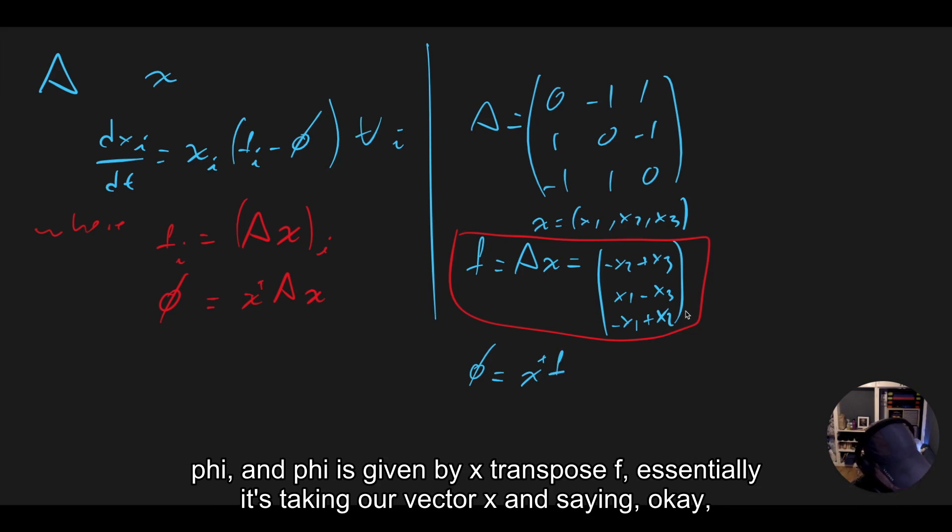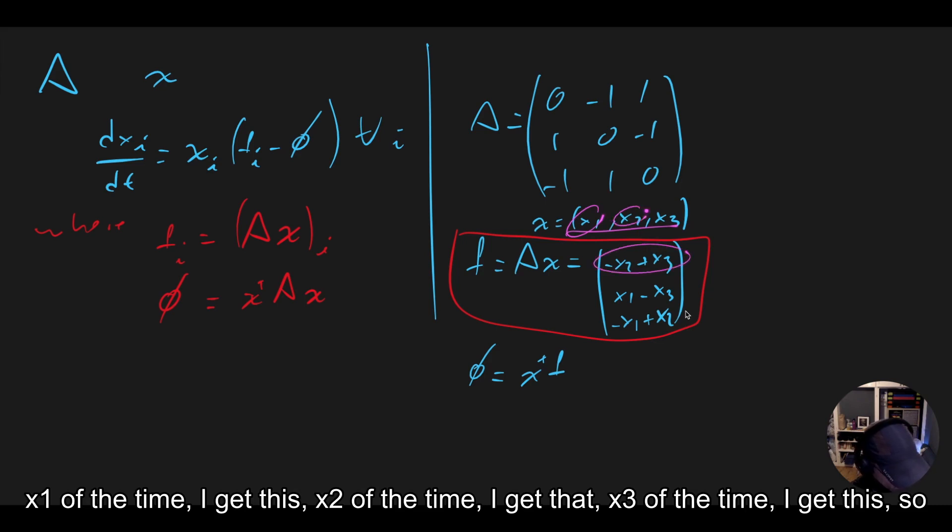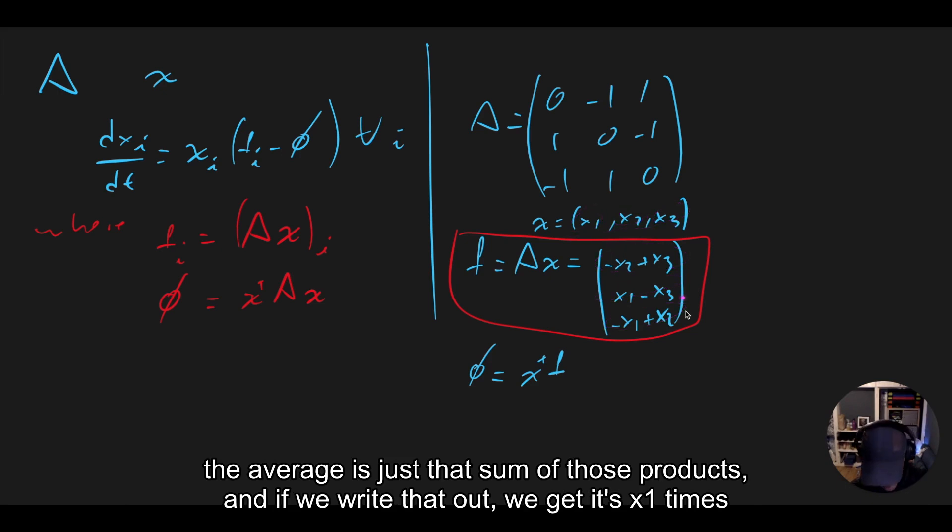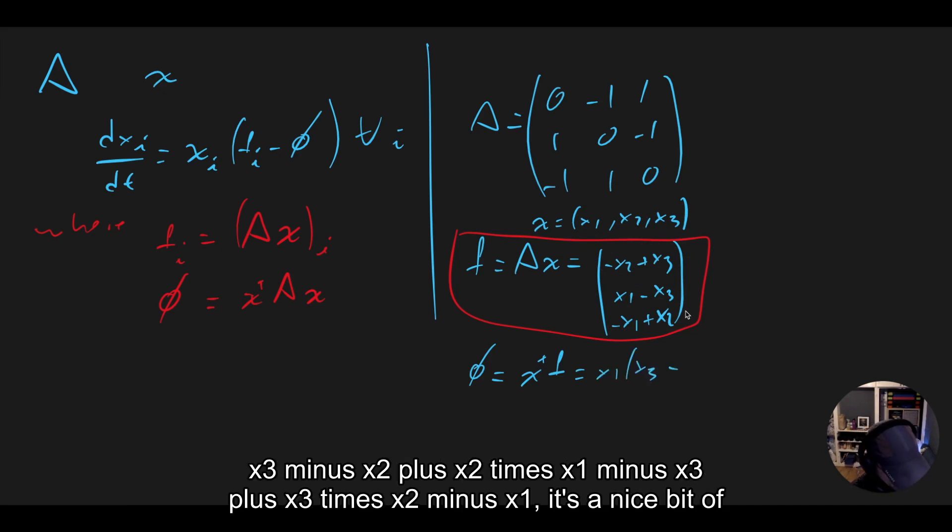Essentially, it's taking our vector x and saying, okay, x1 at a time, I get this, x2 at a time, I get that, x3 at a time, I get this. So the average is just that sum of those products. And if we write that out, we get it's x1 times (x3 - x2) plus x2 times (x1 - x3) plus x3 times (x2 - x1).